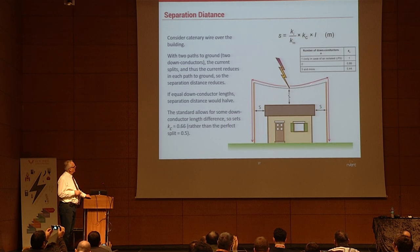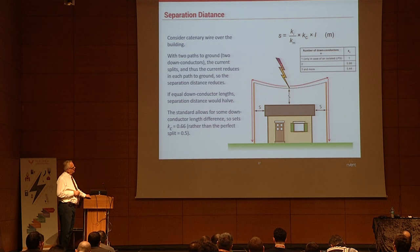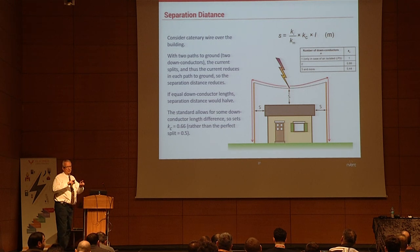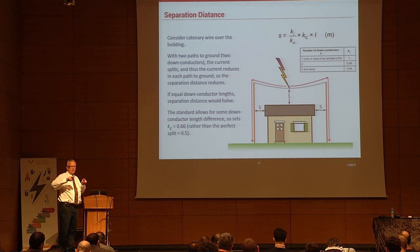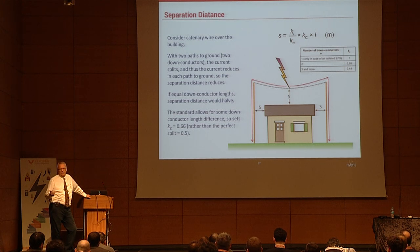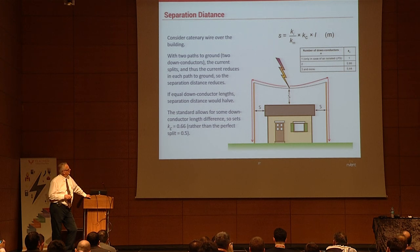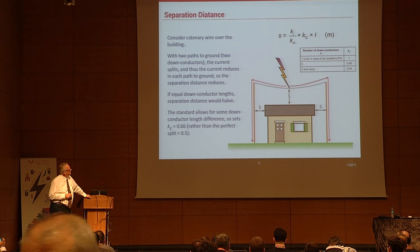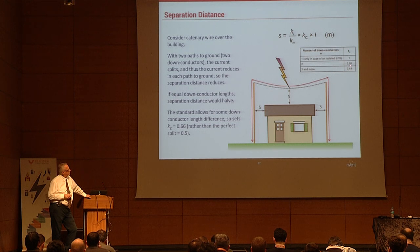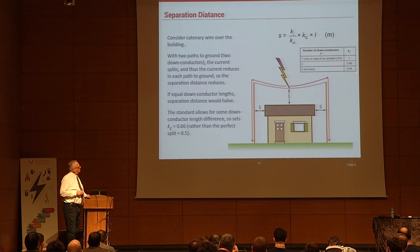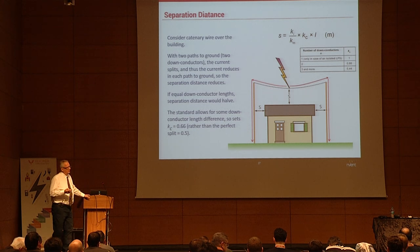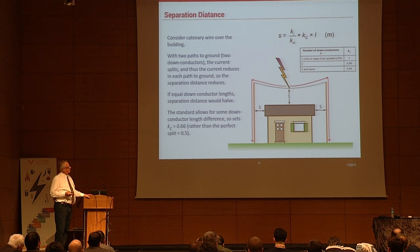In a more specific example with a freestanding mast and catenary wire, if the strike hits in the middle you'd assume current splits 50/50, but conditions aren't perfect — strike location and impedance variations affect the split. The Kc factor is 1 for a single conductor; for two conductors the standard says it doesn't split 50/50 but uses a factor of 0.66, and for three or more conductors it's 0.44. These constants include a fudge factor that helps with the calculation.